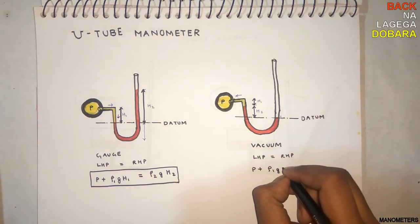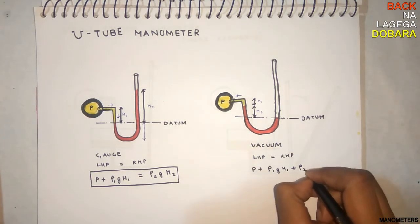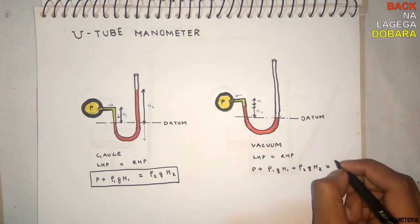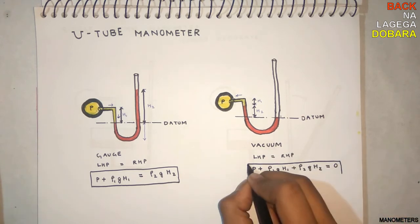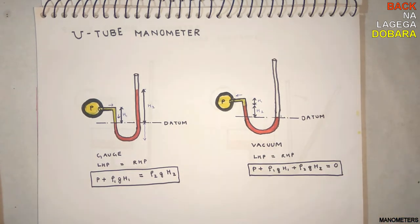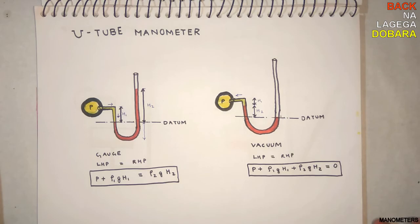First, it will be pressure from the pipe, rho 1 g H1 for yellow, rho 2 g H2 for heavy liquid, equal to zero. Simple. These two formulas we will use for calculations.